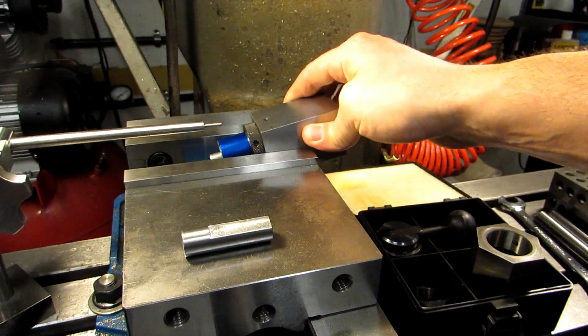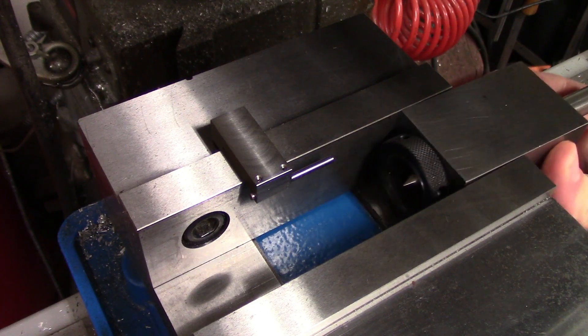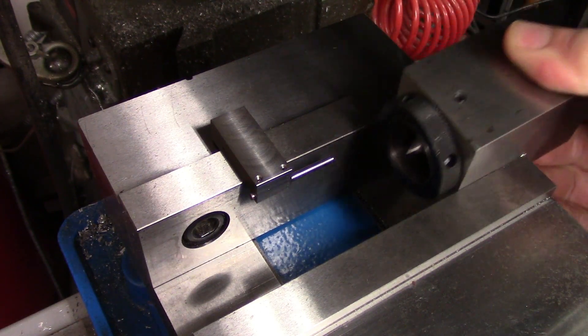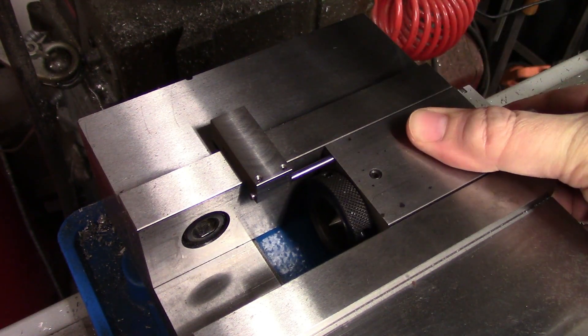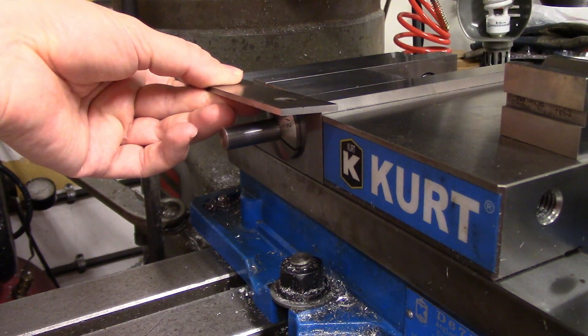It's a good idea to use these in conjunction with a table stop or a vise stop to locate the block in the same position in the vise for each index. You can also use a parallel on the vise jaws as a stop for quick work.